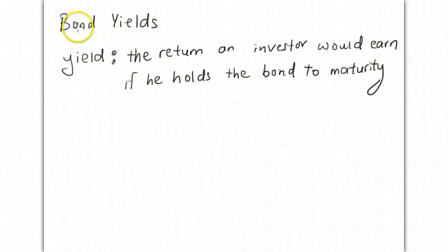We come to the concept of bond yields. What is a bond yield? It's simply the return that an investor would earn if he holds the bond to maturity. Having said this, a bond coupon doesn't necessarily equate to the yield.